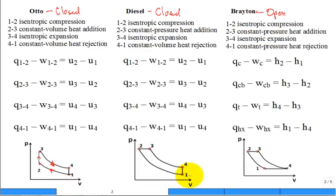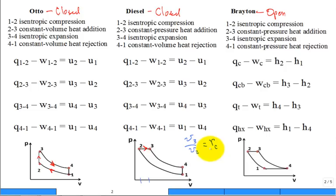For the Diesel cycle, the difference is constant pressure heat addition from 2 to 3, not constant volume — and that's part of the expansion. This introduces an additional parameter: the cut-off ratio, which is the ratio of the volume at state 3 to the volume at state 2. The compression ratio is V1 over V2 — roughly 10 for the Otto and roughly 20 for the Diesel. The cut-off ratio only applies to the Diesel cycle.